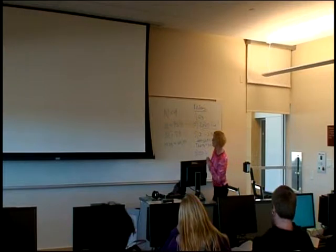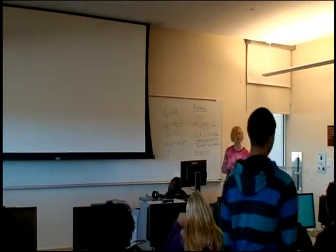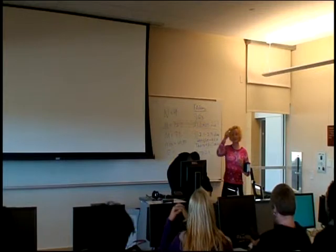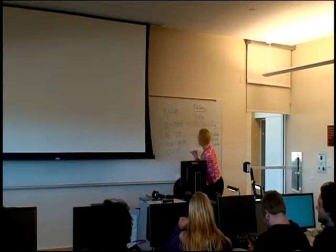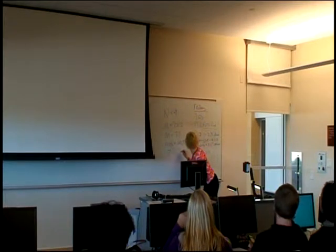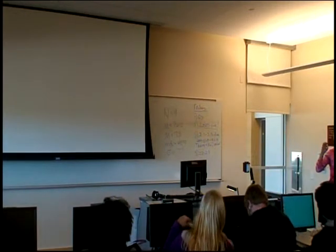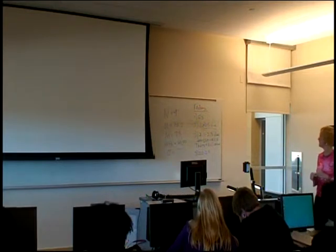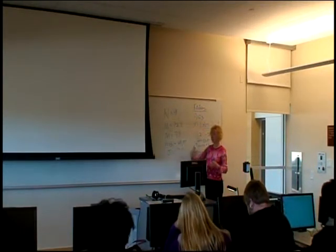What is our standard deviation? In this case, because this is population data, you're going to look for sigma on your output. The population standard deviation is 7.7. Remember, the population and sample standard deviations are calculated a little bit differently, so you get very slight differences in those two numbers. You've got to pick out the correct one depending on if you have sample or population data.